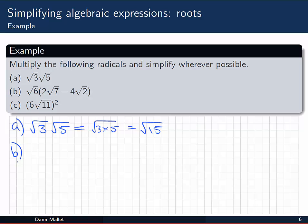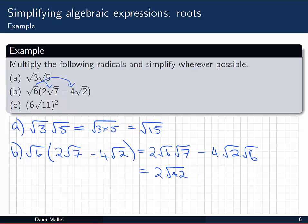In part b, we are going to use the distributive law to bust these brackets open. So we have the square root of 6 times (2√7 - 4√2), expanding to give us 2 times √6 times √7, take away 4 times √2 times √6. Now that one we can push together to give us 2√42, take away 4√12.